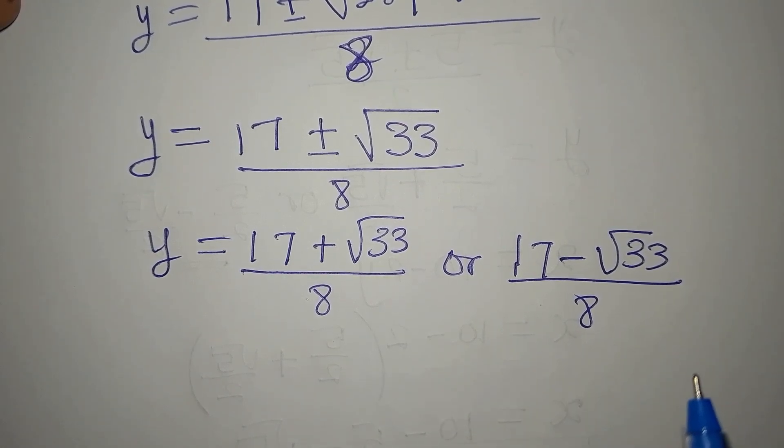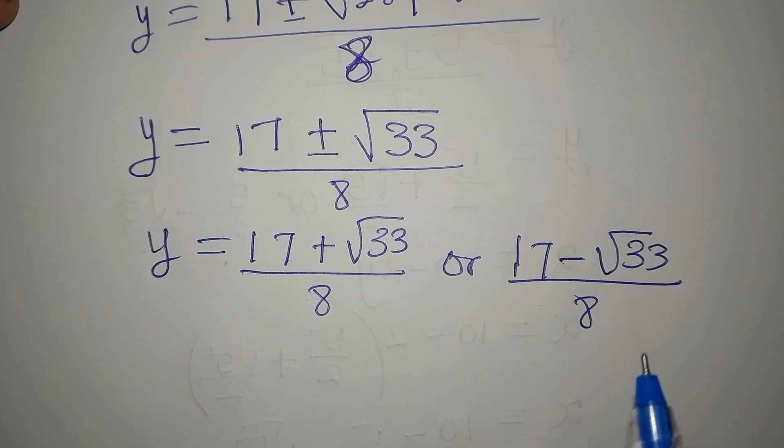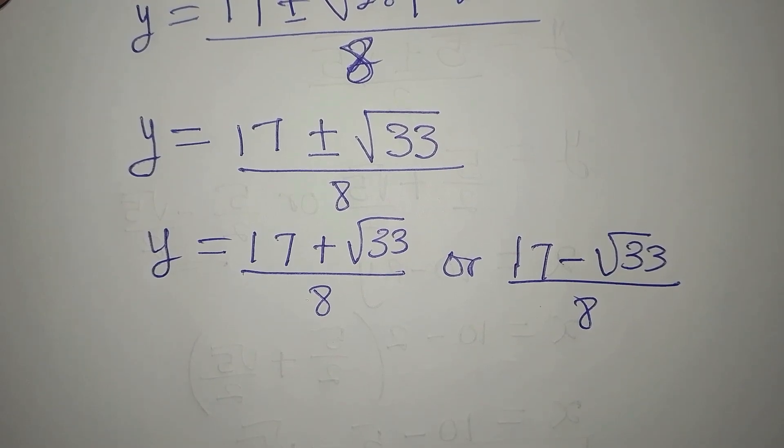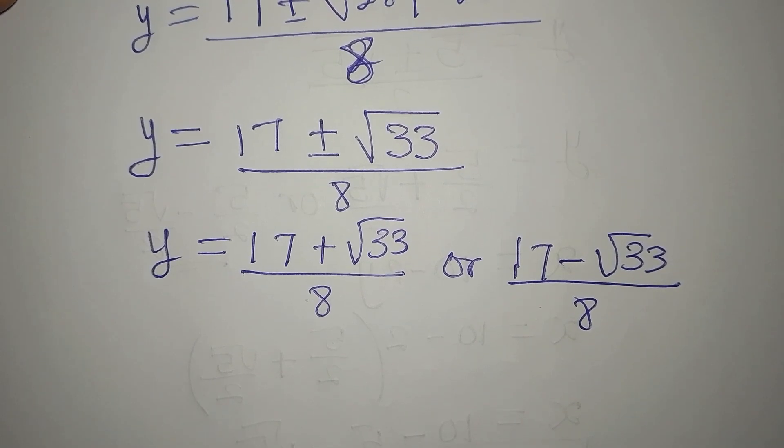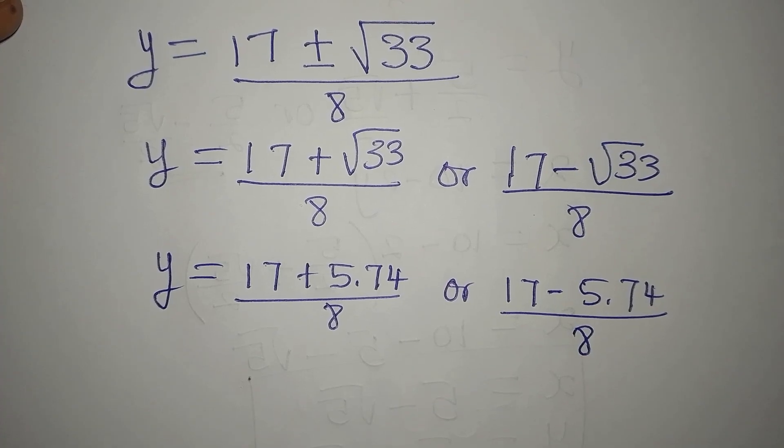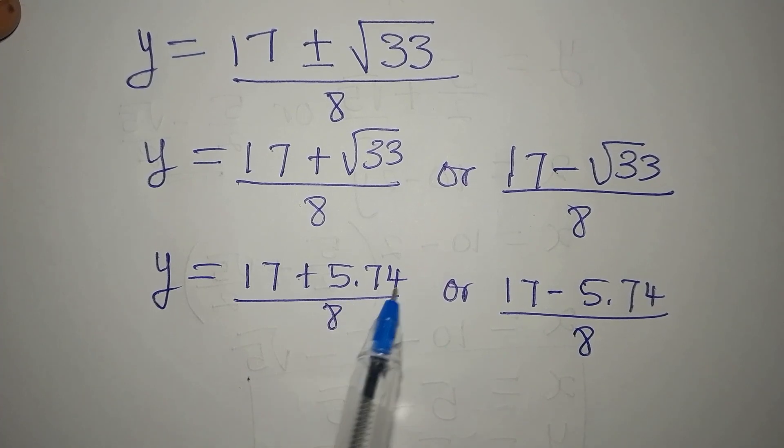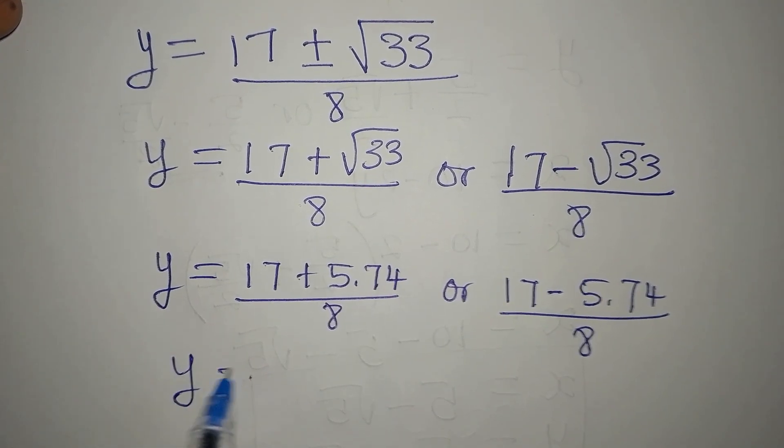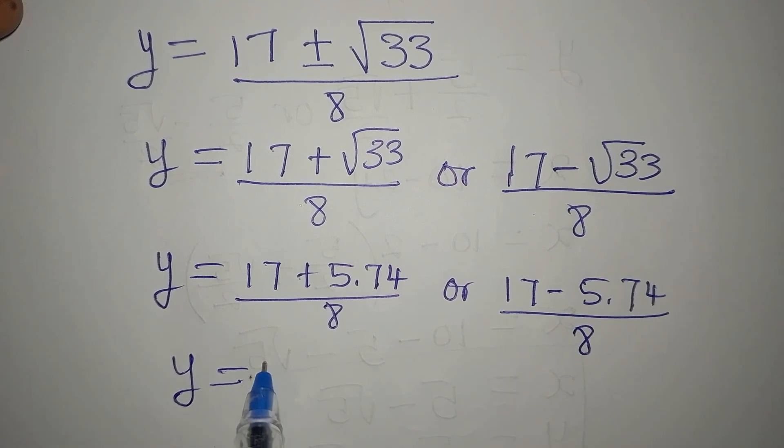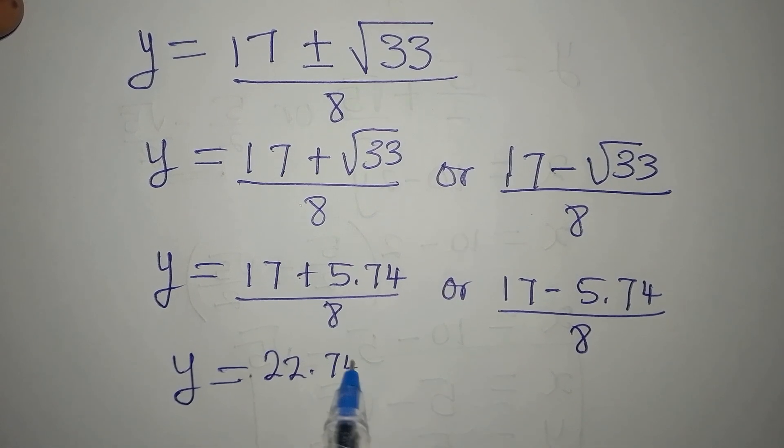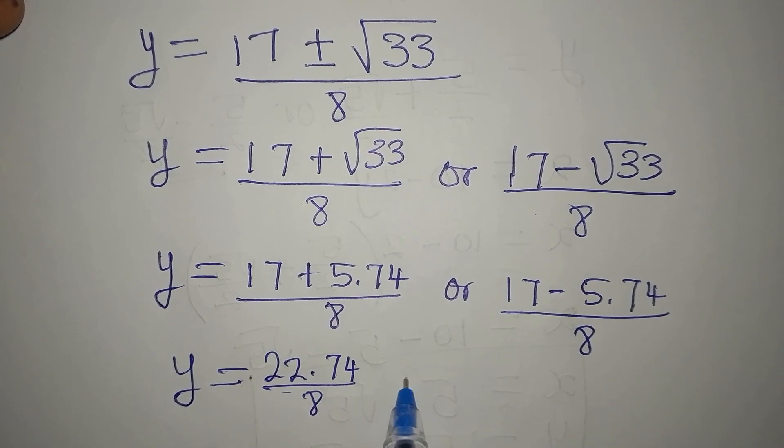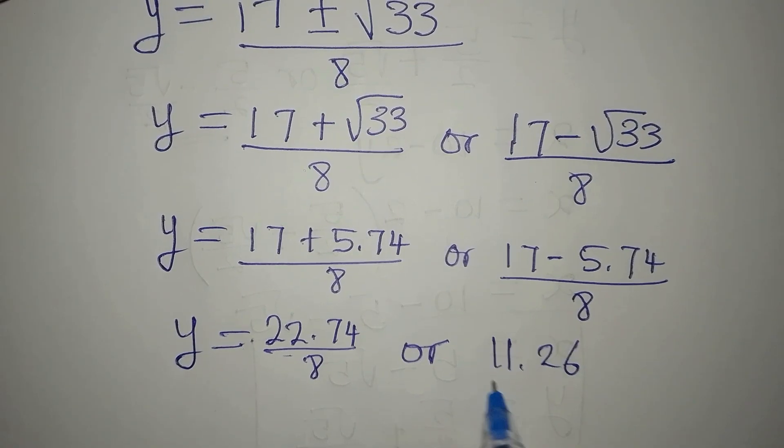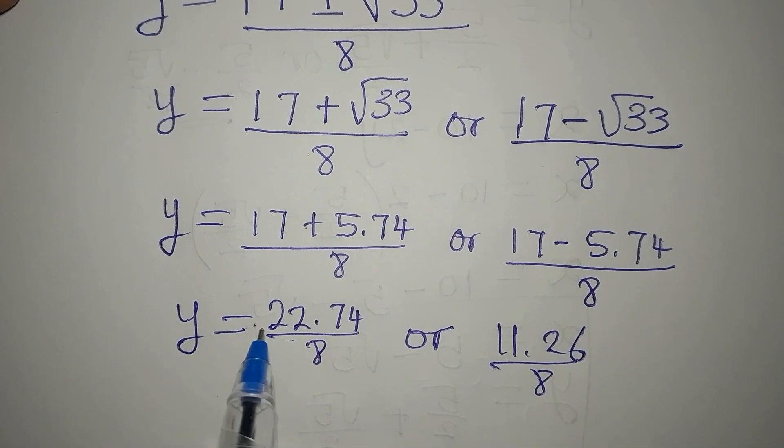And for us to know the value that would satisfy, let's get this in decimal form. Let's get the square root of 33. So we have 17 plus 5.74, square root of 33 is 5.74, so this means that our y from here is 22.74 divided by 8, or on this side we have 11.26 divided by 8.